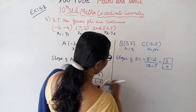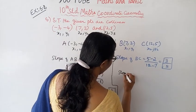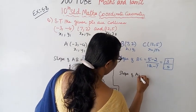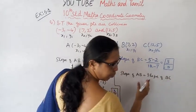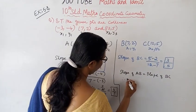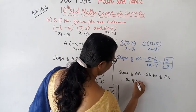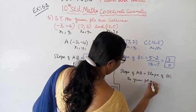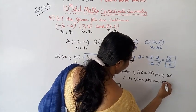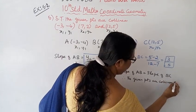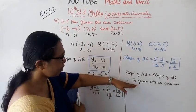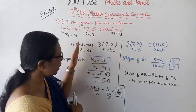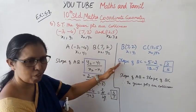So, slope of AB is equal to slope of BC. Therefore, the given points lie on the same line and are collinear.